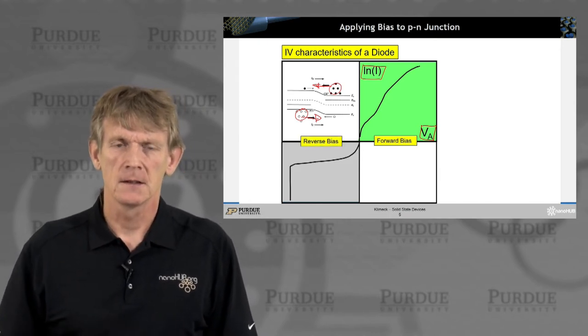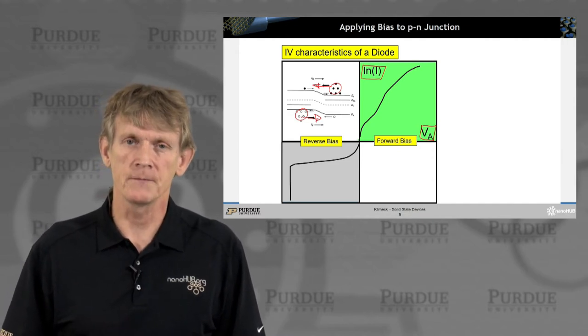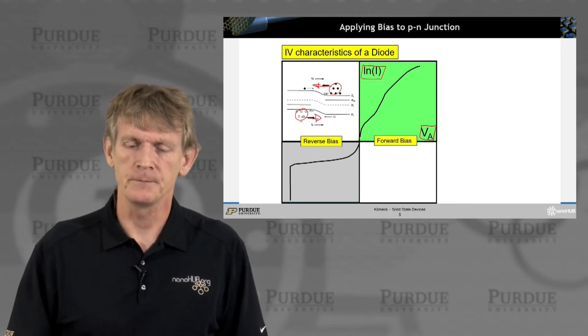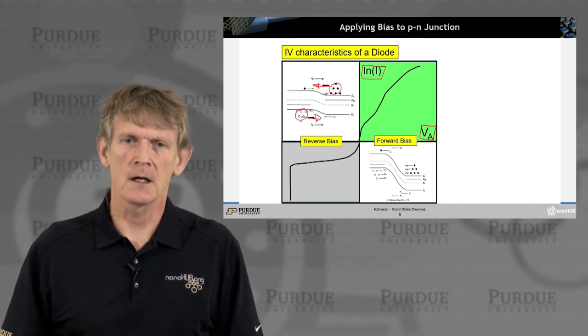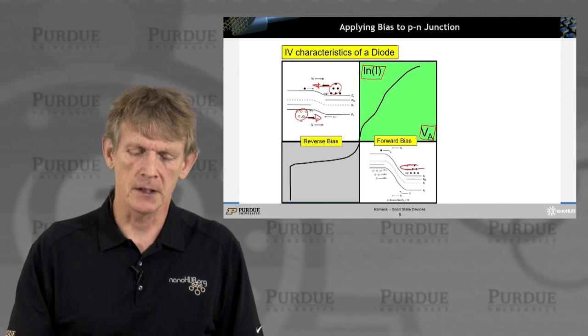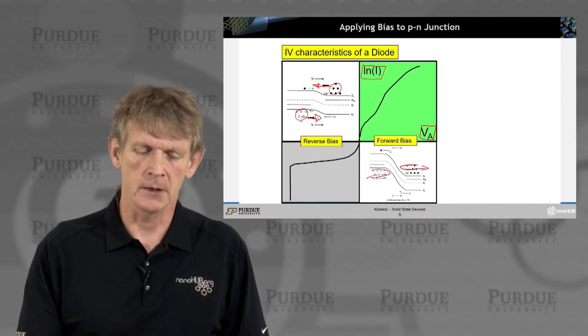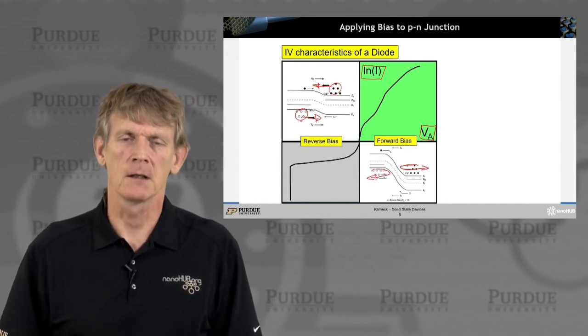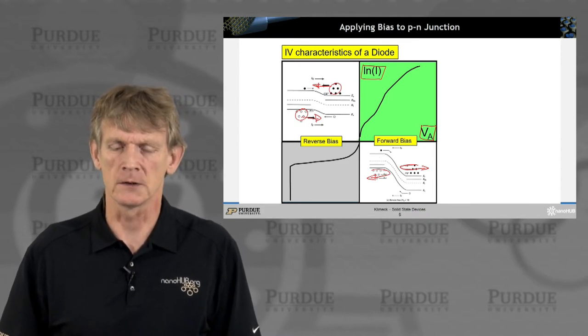In reverse bias, the current is relatively small, very small. Ideally, it's negligibly small. And what is indicated here is that you have a large barrier to the electron flow. So most of the electrons are being rejected. They're not making it through the structure. Similar to the holes, they're not making it through the structure. And there's other mechanisms that allow some carriers to make it through. And those are some of the non-idealities that we'll talk about.